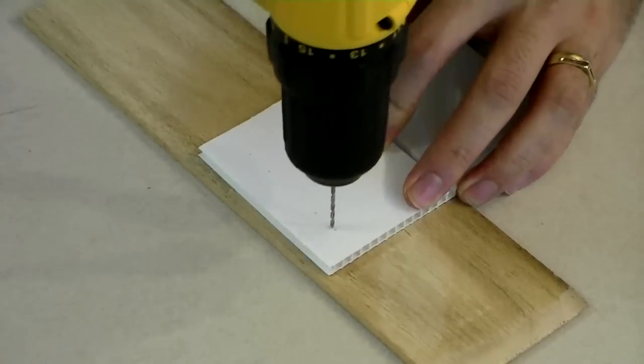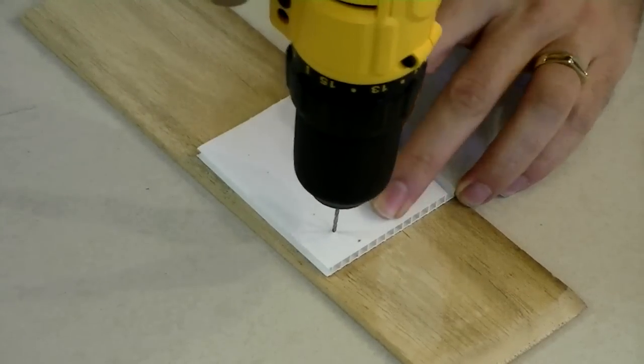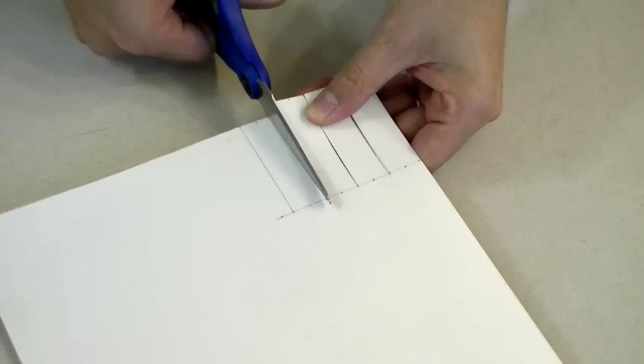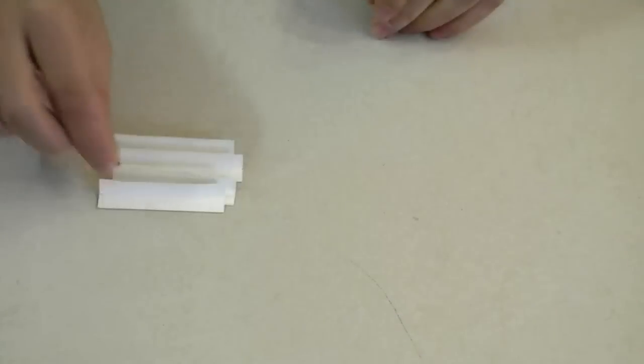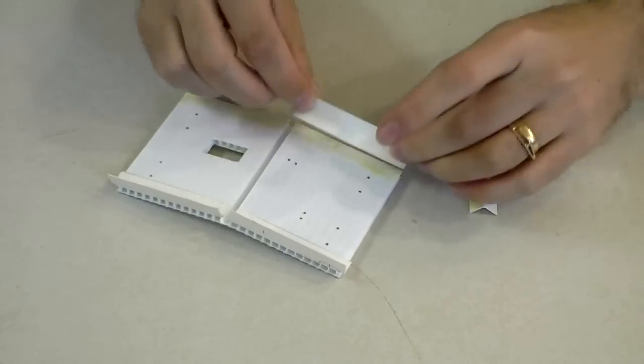Cut out and drill some holes. Cut out four strips of cardboard and bend them. Glue them in place.